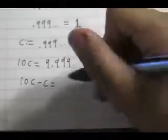The last method we'll use is a simple application of algebra. We'll start by letting c equal 0.9 repeating. Therefore, 10c equals 9.9 repeating.